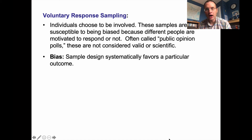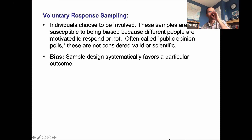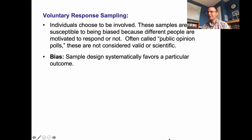That also represents a bit of what is called voluntary response sampling. In voluntary response sampling, the individuals choose to be involved. This is problematic because you can get bias here, as different people are motivated to respond or not. In the example of our research participation pool in intro linguistics, those students are choosing to participate. There are many students every year who do not choose to participate, but they're also part of the population of interest — we just don't get a chance to study them because we can't compel them.